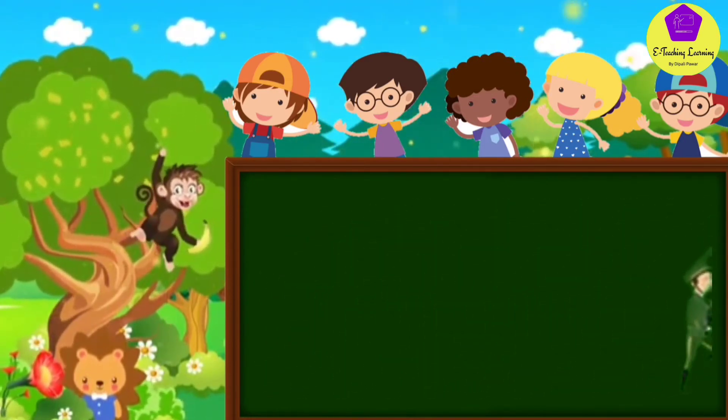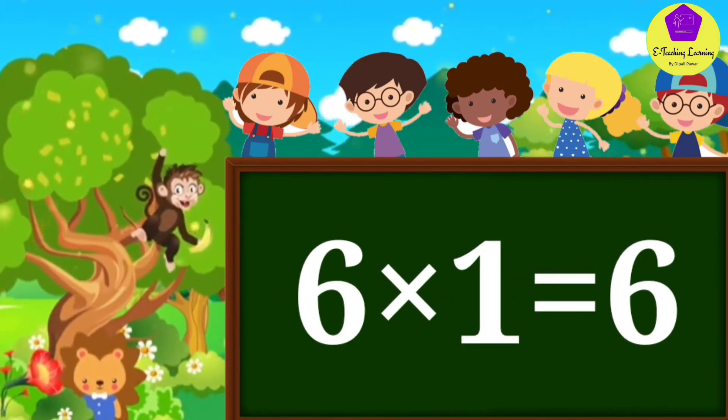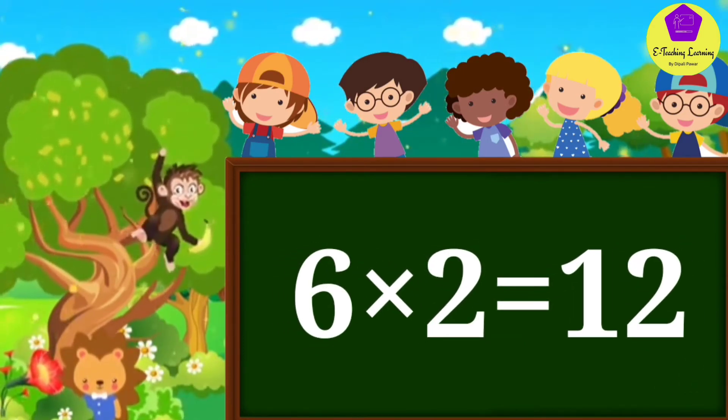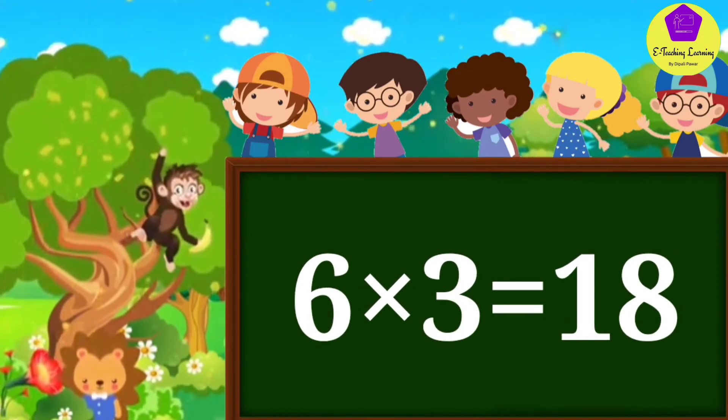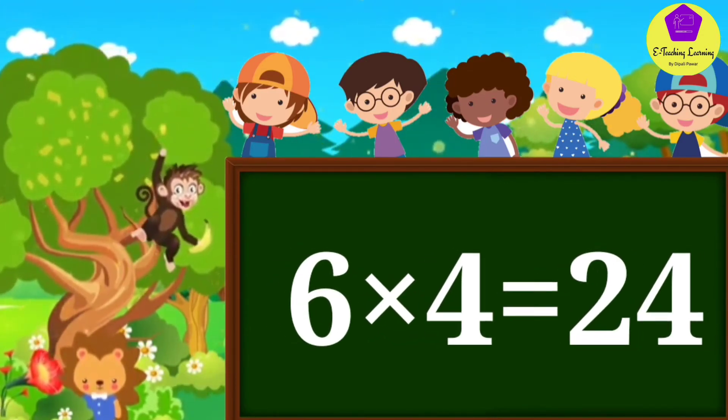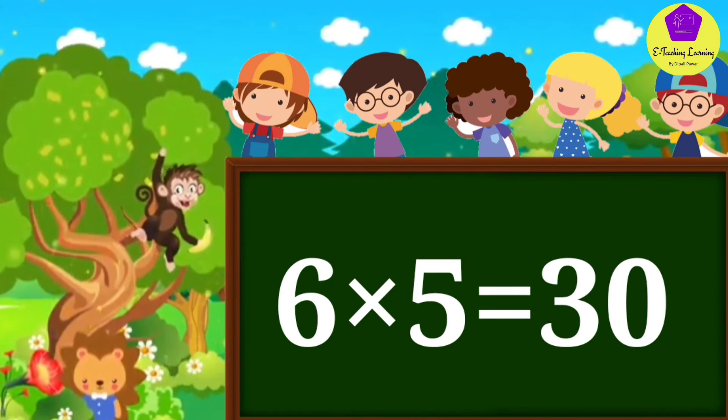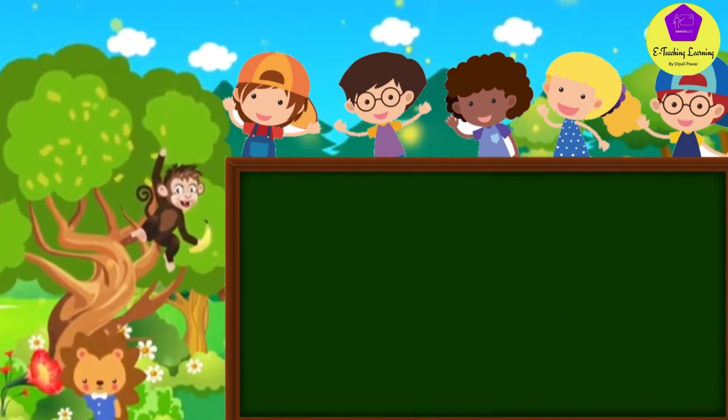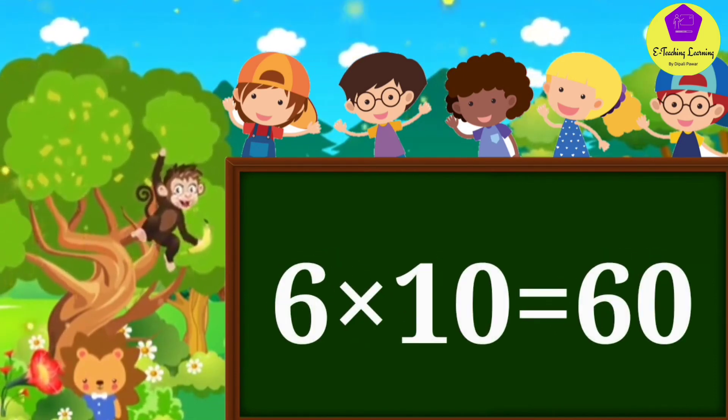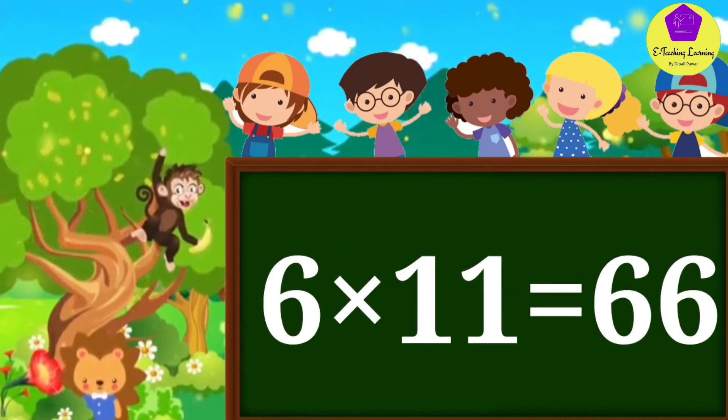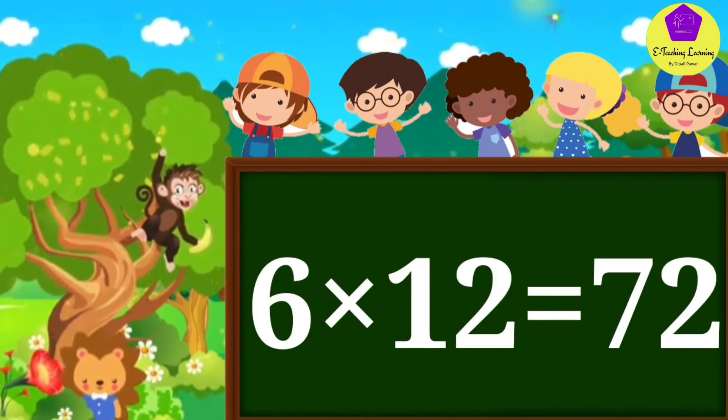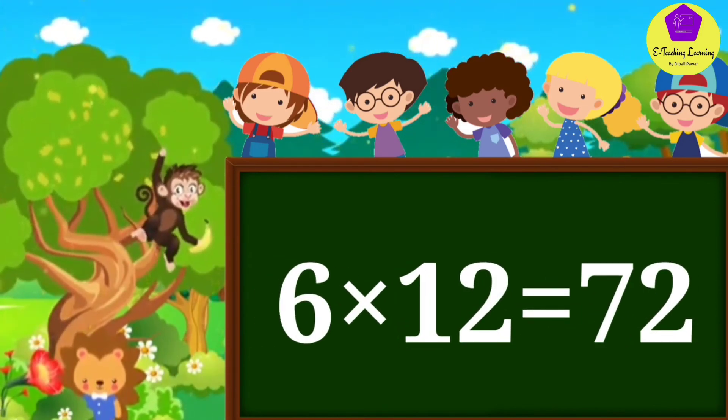Come on, repeat with me. Six ones are six, six twos are twelve, six threes are eighteen, six fours are twenty-four, six fives are thirty, six sixes are thirty-six, six sevens are forty-two, six eights are forty-eight, six nines are fifty-four, six tens are sixty, six elevens are sixty-six, six twelves are seventy-two.